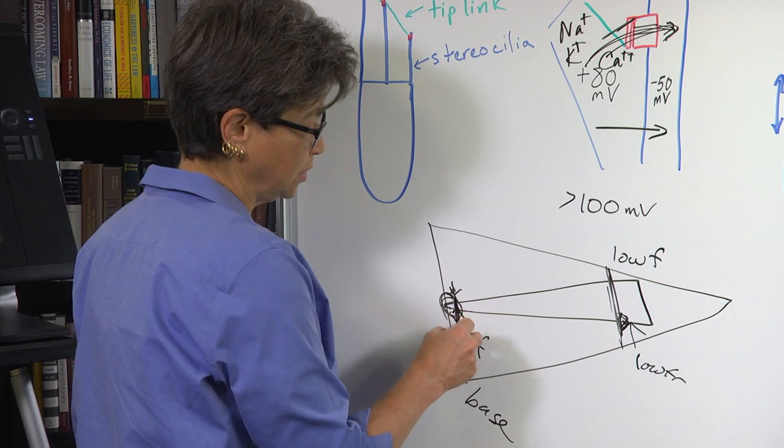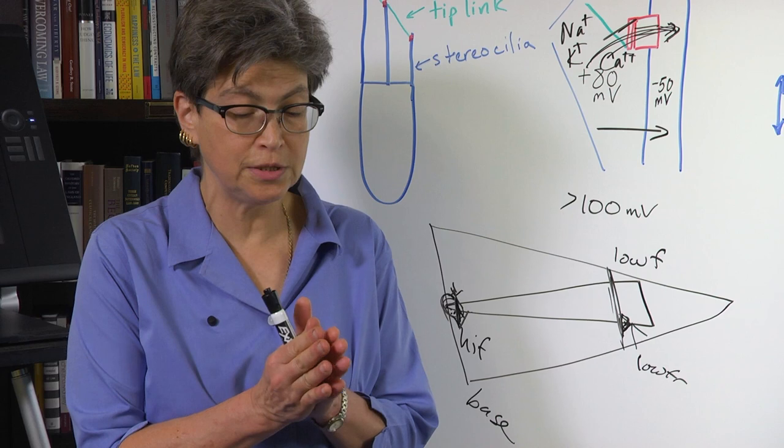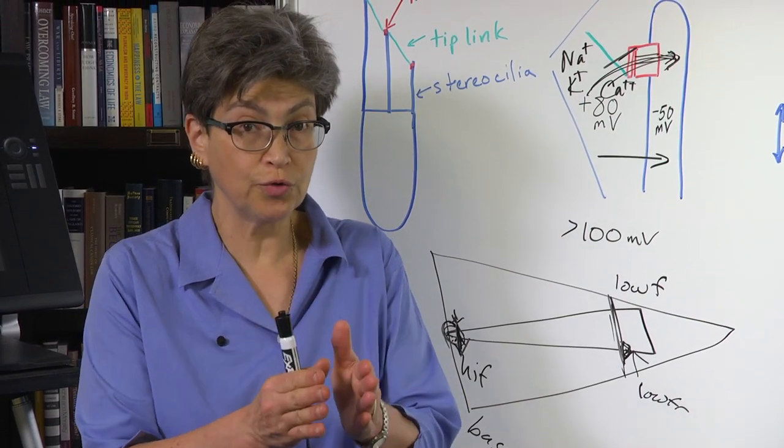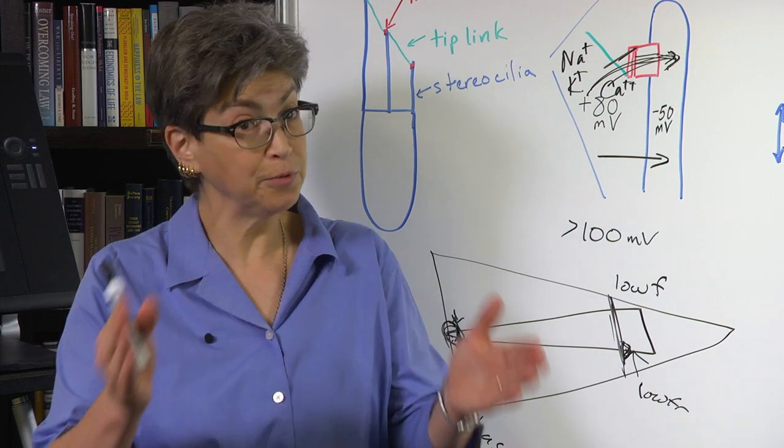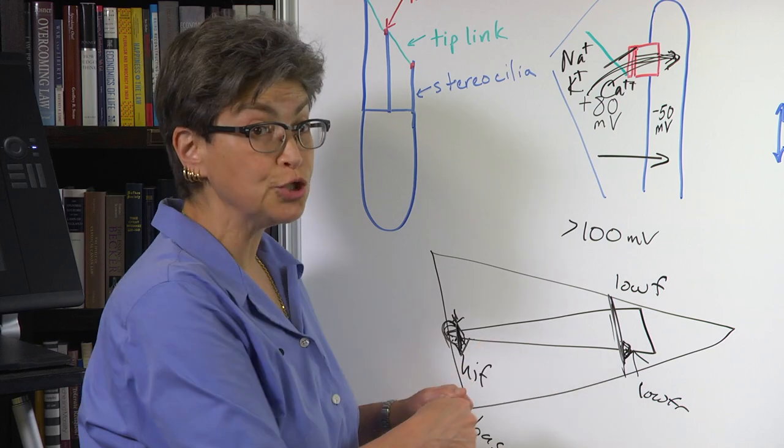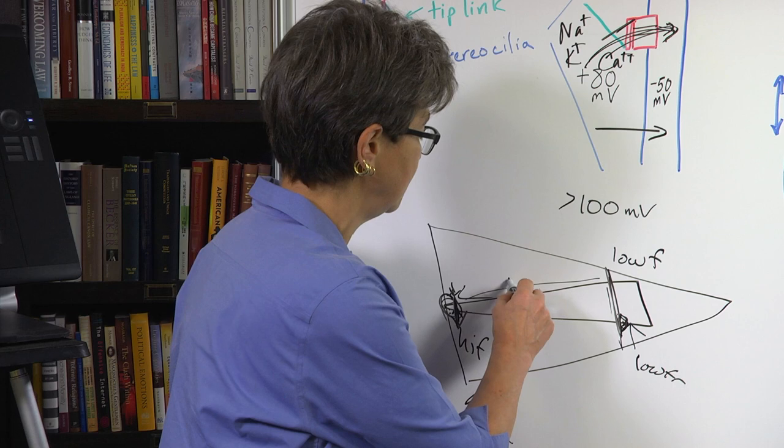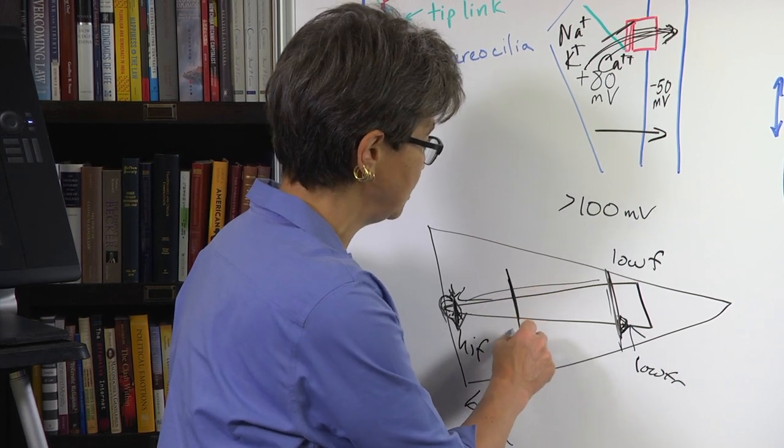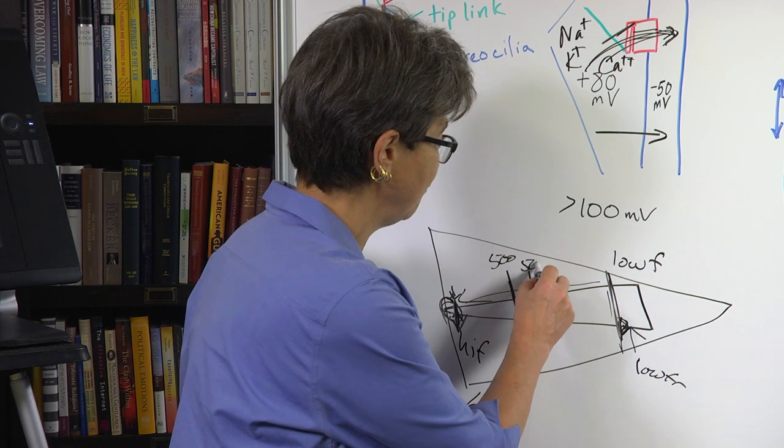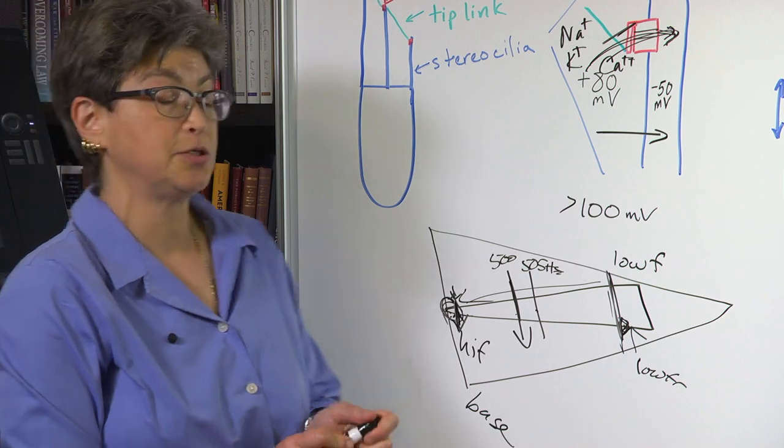In this way, not only do the outer hair cells increase the amplitude of the signal, but they also increase the resolution. So it improves the tonotopy. It improves the distinction. It allows you to distinguish between, say, 500 and 505 hertz, because the characteristic frequencies at these two locations are different.